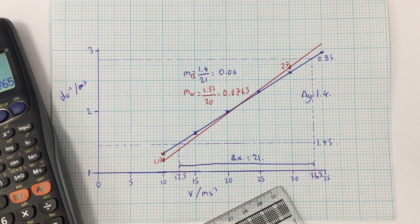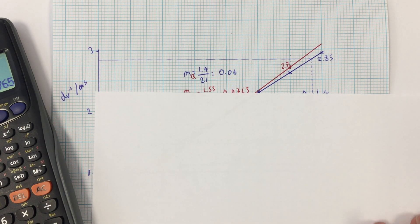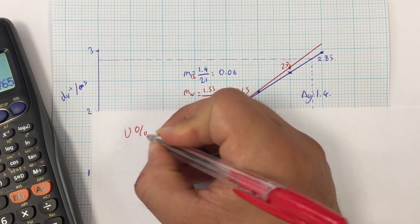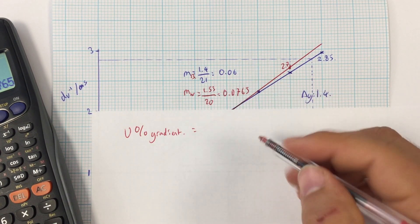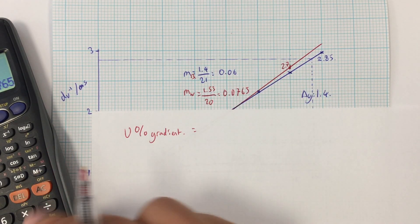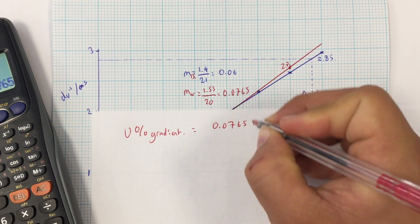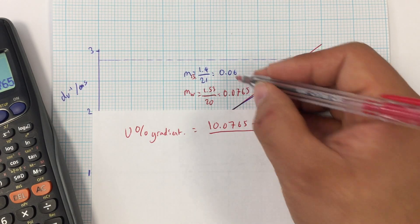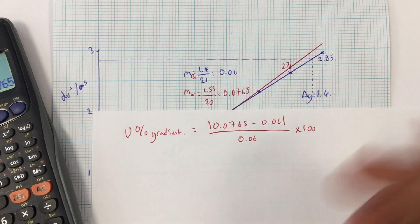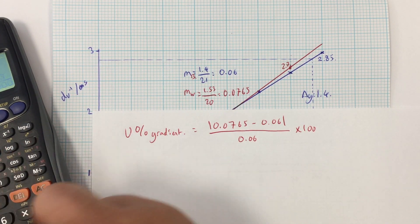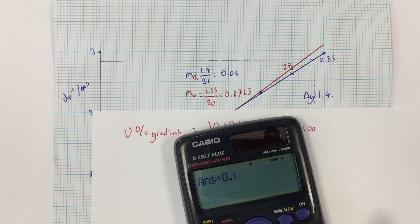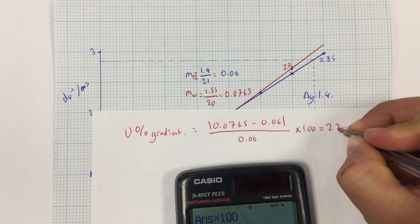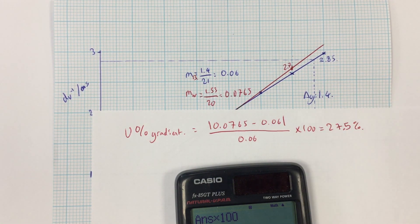The equation for my percentage uncertainty in my gradient is: the modulus of (best fit gradient minus worst fit gradient), divided by the best fit gradient, times 100. So: |0.0765 minus 0.06| divided by 0.06 times 100 gives me a percentage uncertainty in my gradient of 27.5%.